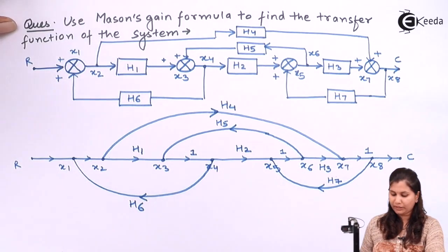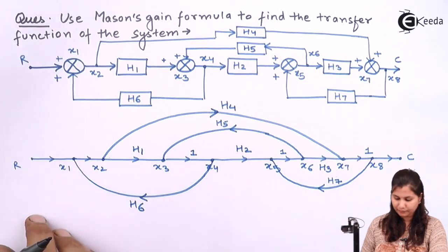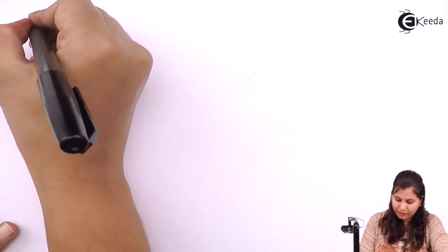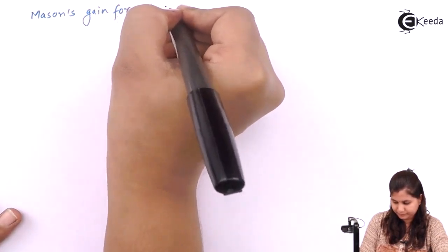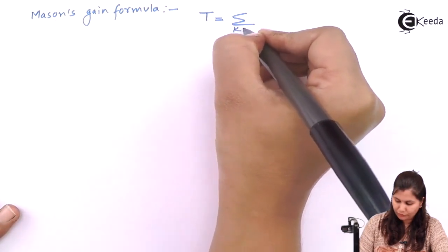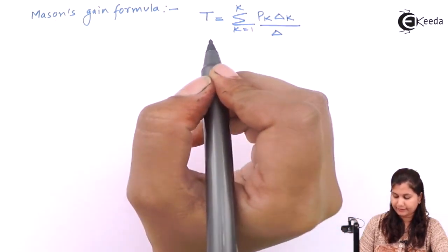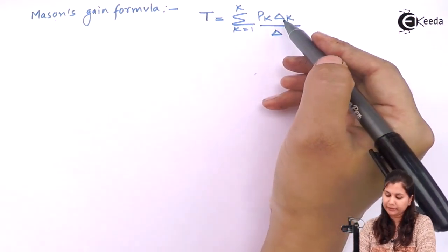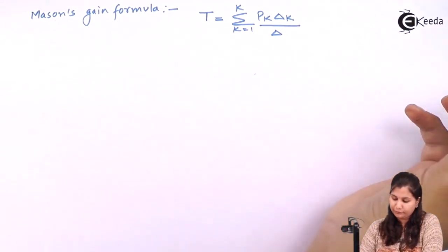The Mason's gain formula is: T equals summation from K=1 to K of Pk times Delta K, divided by Delta. Where T is the transfer function of the system, Pk is the gain of the forward path K, Delta is the graph determinant, and Delta K is the cofactor of Delta for forward path K.